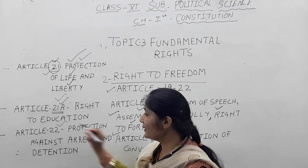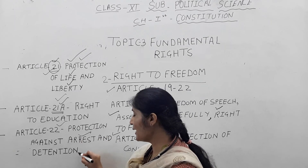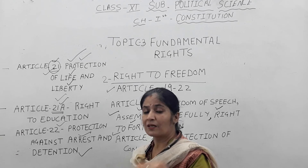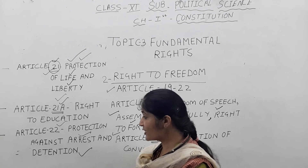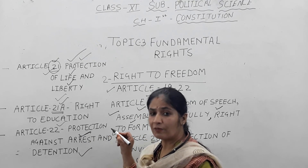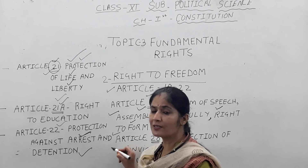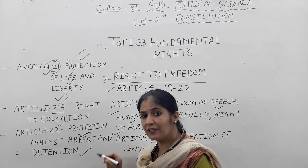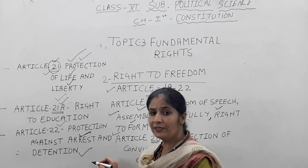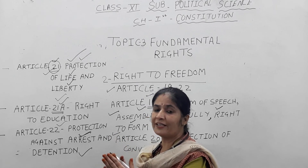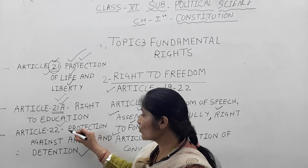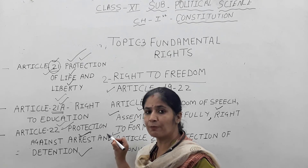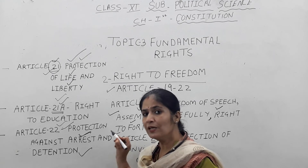Article number 22 deals with protection against arrest and detention. If a person is arrested by the police, it is compulsory that the arrested person be presented before a nearby magistrate within 24 hours. The arrested person is protected by the law and has the right to hire a lawyer regarding their rights. Article 22 protects the arrested person and requires representation before a magistrate within 24 hours.